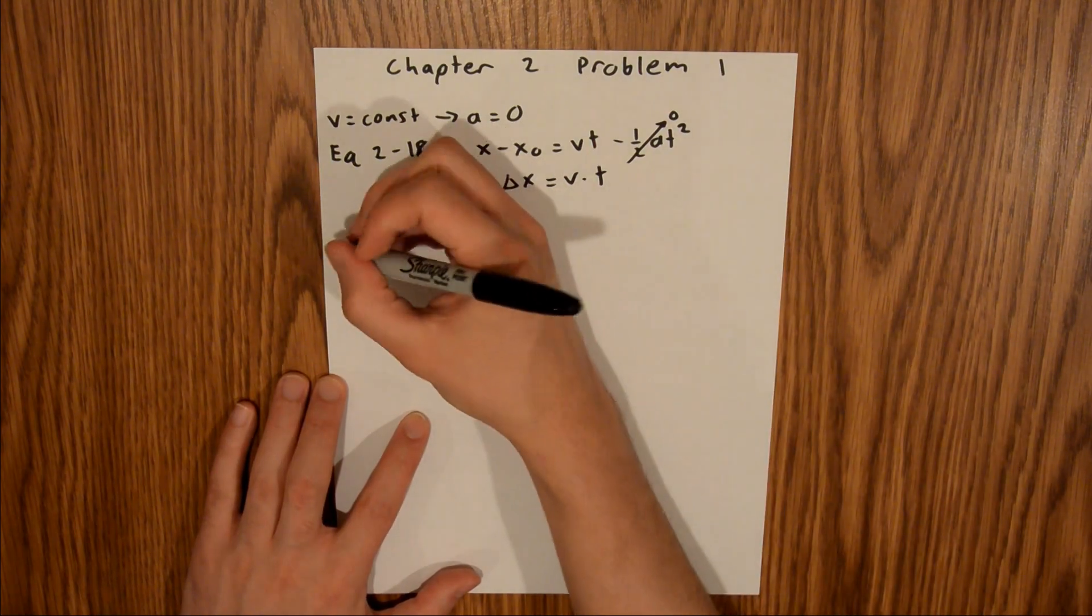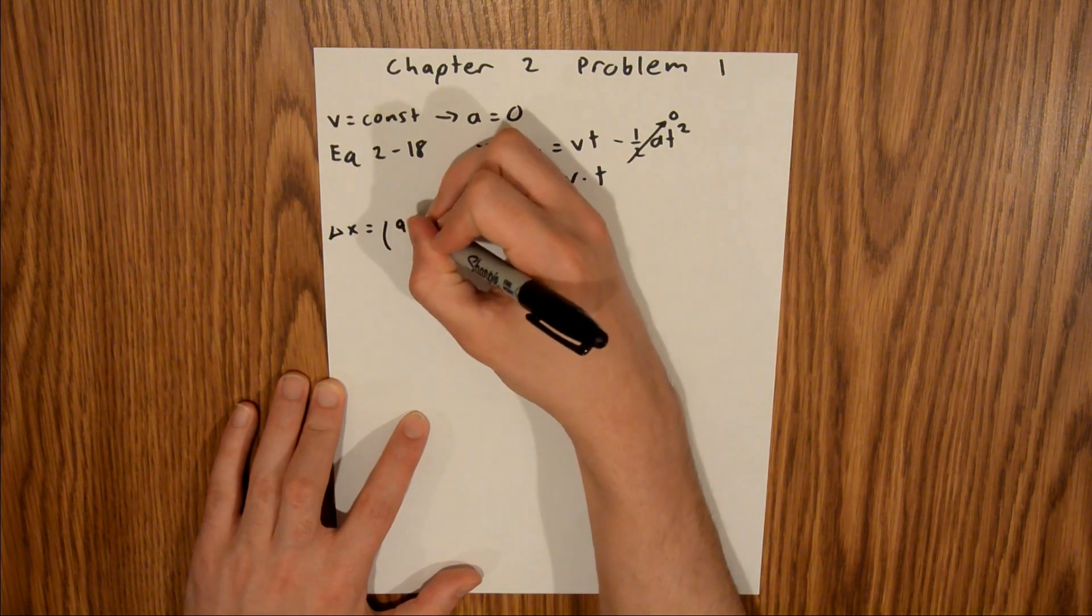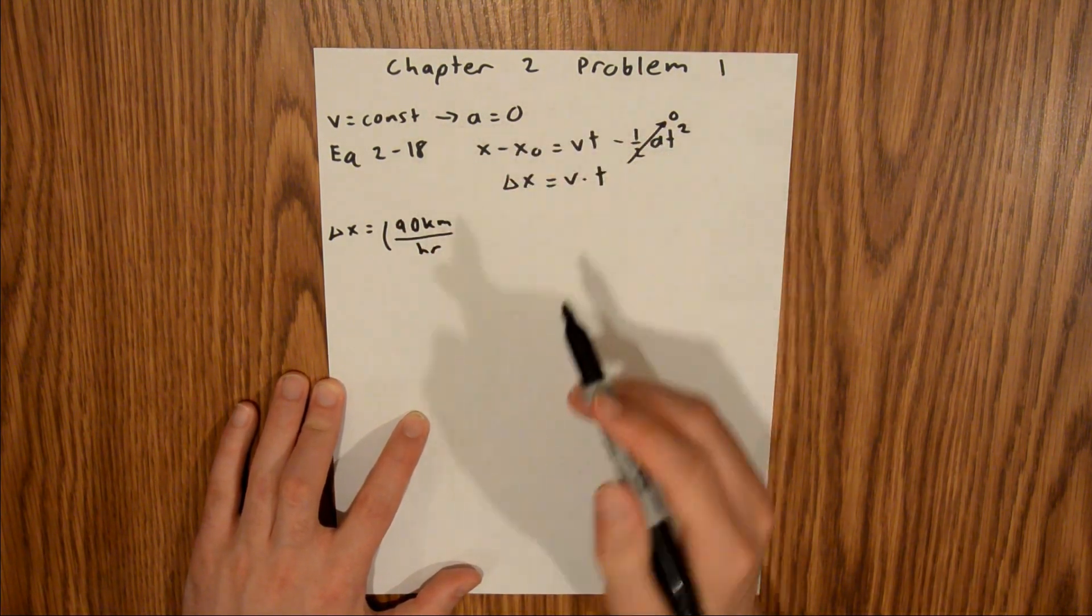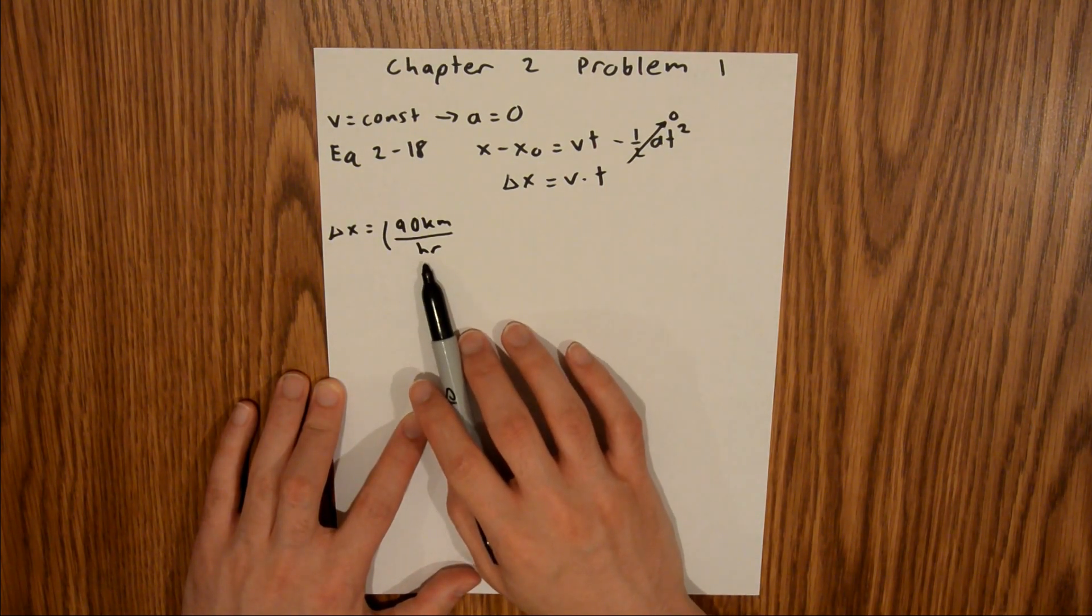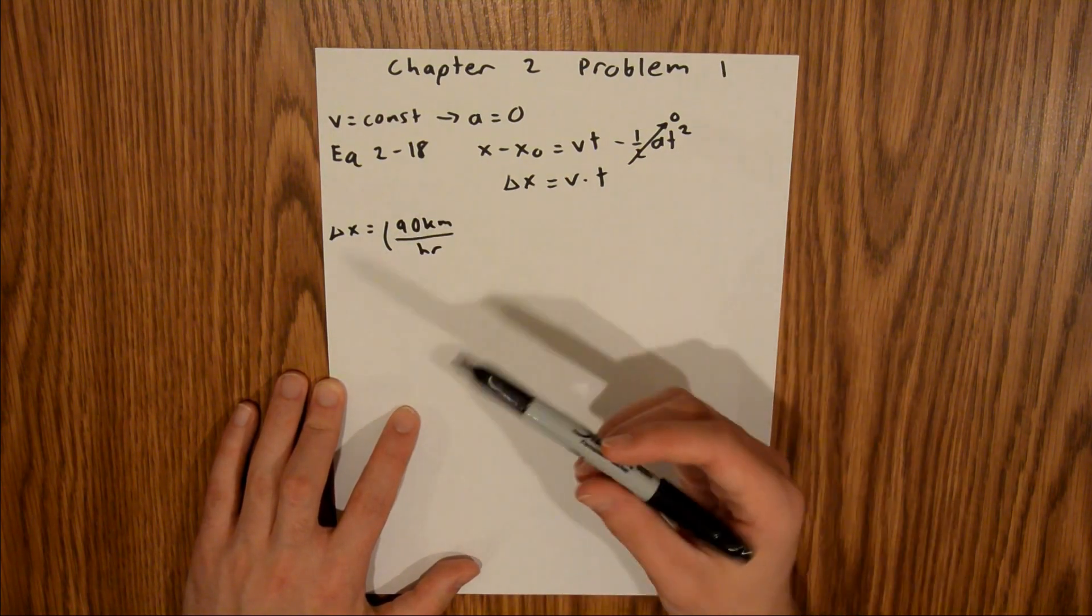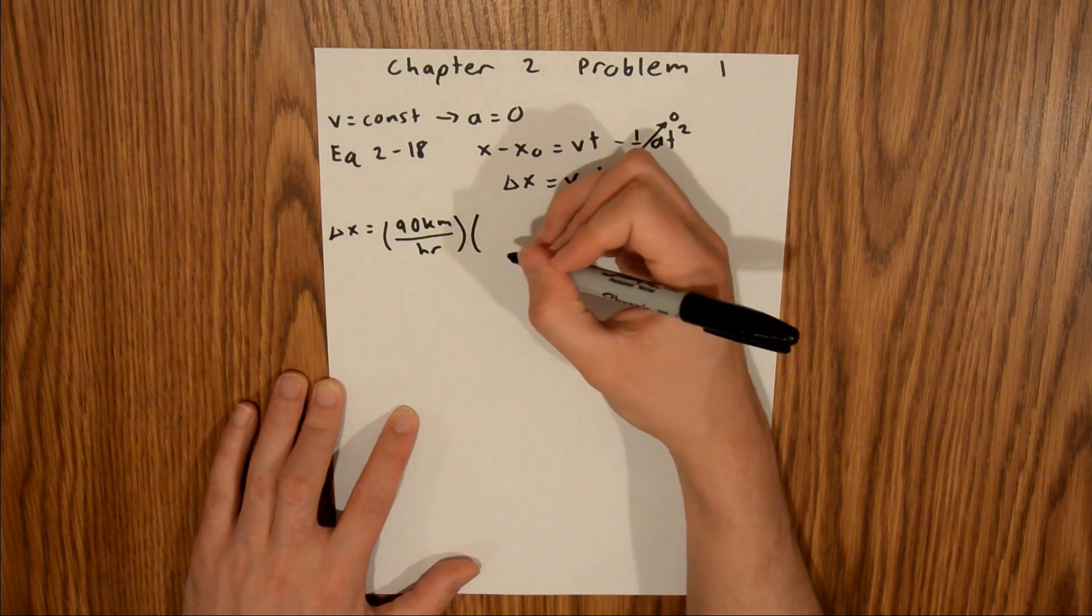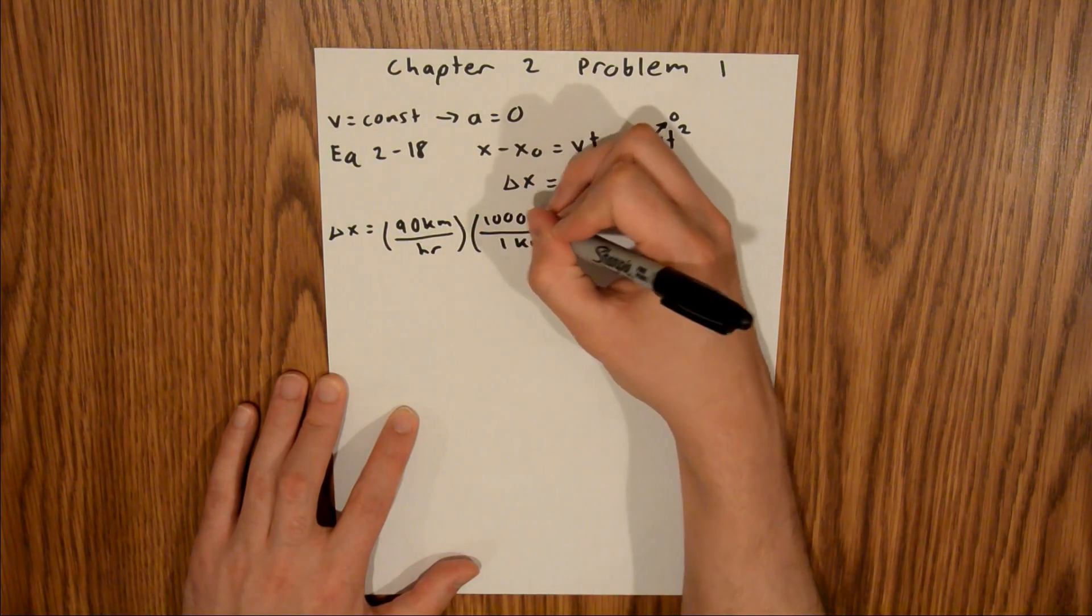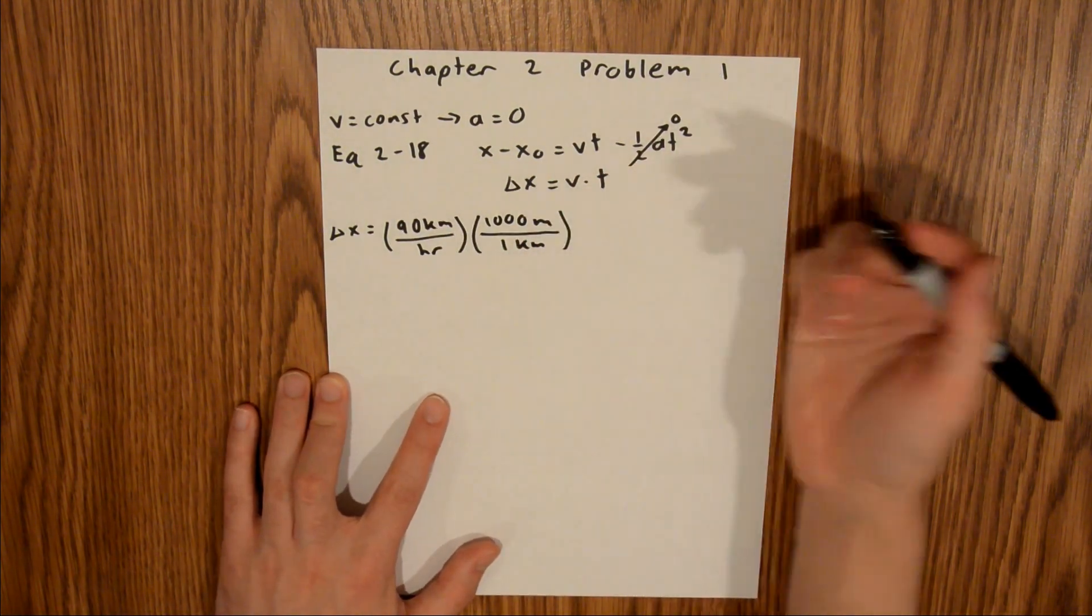Delta x is equal to 90 kilometers per hour. And since we're given time in seconds, I would like to convert this unit into seconds. And just for convenience, I would also like to convert this into meters. We will do the distance first. We know that there is 1,000 meters in 1 kilometer. So there's our conversion from km to meter.